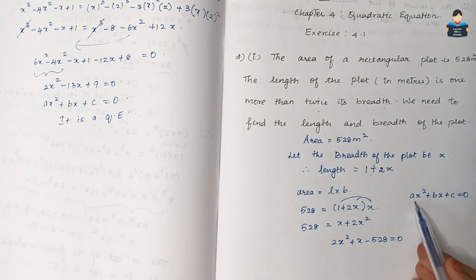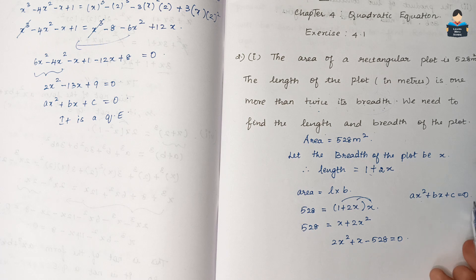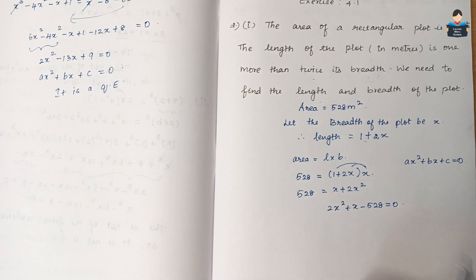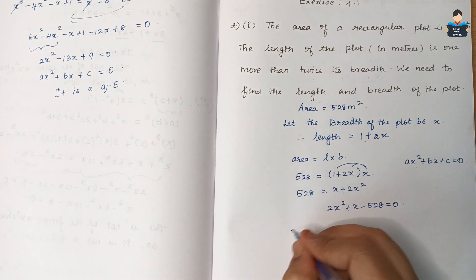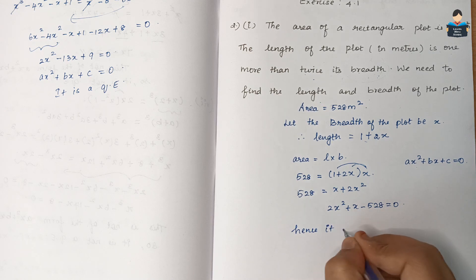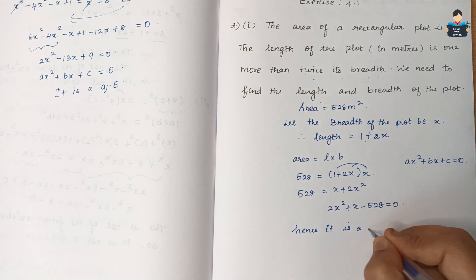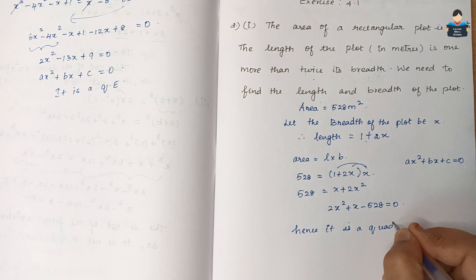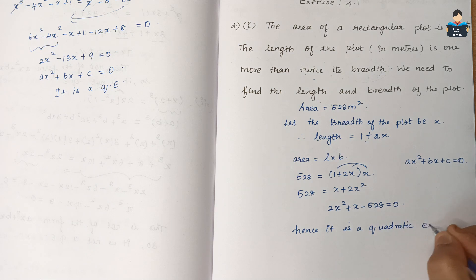This is of the form ax² + bx + c = 0, therefore it is a quadratic equation. Next, the second subdivision.